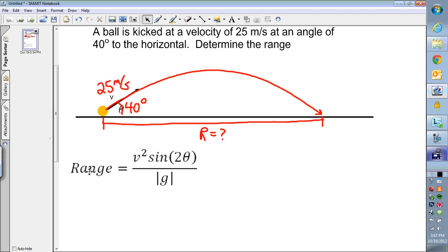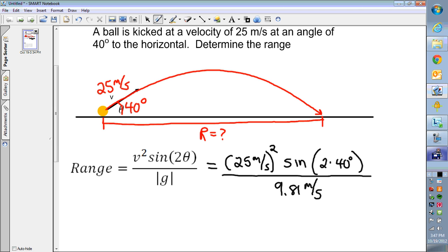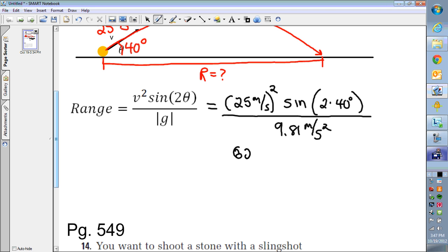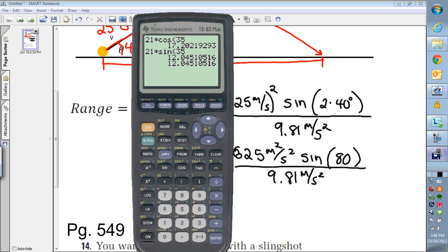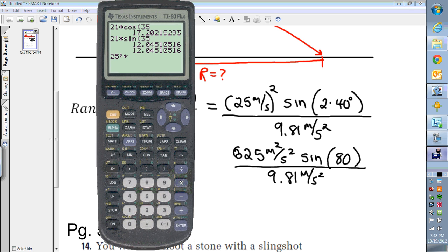So we'll bring our range formula down. To get the range, we take v squared. So my velocity is 25 meters per second squared. The sine of 2 times the angle of 40 degrees divided by 9.81 meters per second squared. The absolute value just means usually we would call the gravity 9.81 meters per second squared down and we'd make it a negative. We are not doing that in this case because it's the absolute value of that. So we have 625 meters squared per second squared times the sine of 80 degrees over 9.81 meters per second squared.